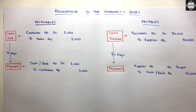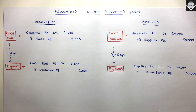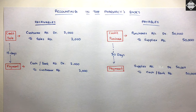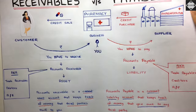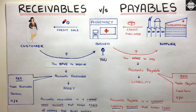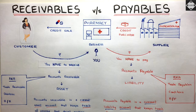These were the journal entries for receivables and payables. One more concept related to this is the provision for bad debts, which we'll cover in another video. I hope you have understood the entire concept of receivables and payables today. That's it for this video — see you in the next one, bye!